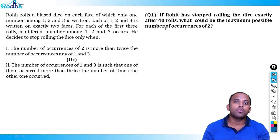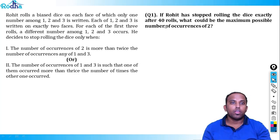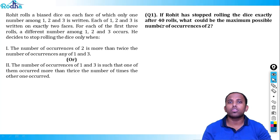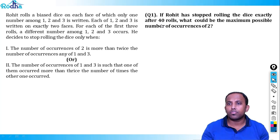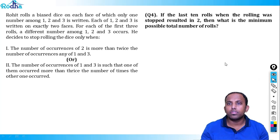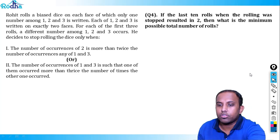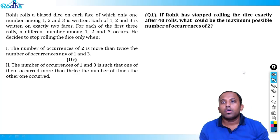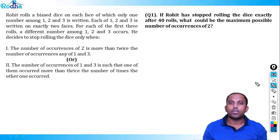Hi guys, my name is Rai Prakash and welcome to a good unconventional CAT-level set. This set has four questions. Try to pause the video, solve the set, and then we'll look at the solutions. Just try to see these four questions, pause the video, attempt them, and then we'll see the conditions.